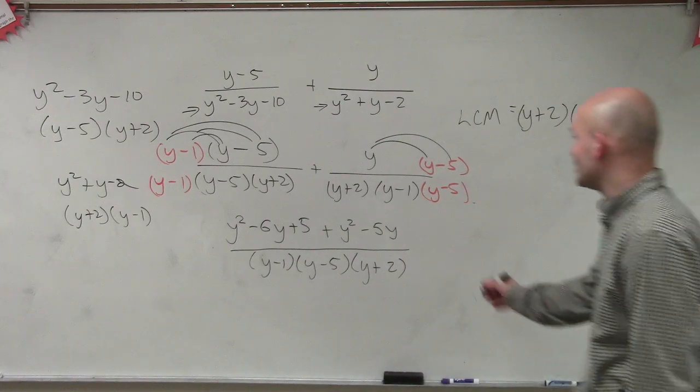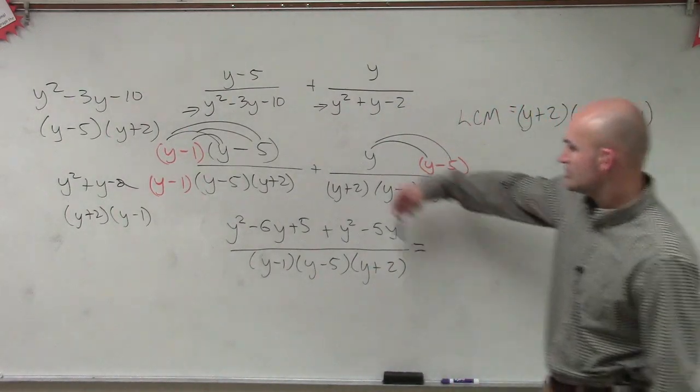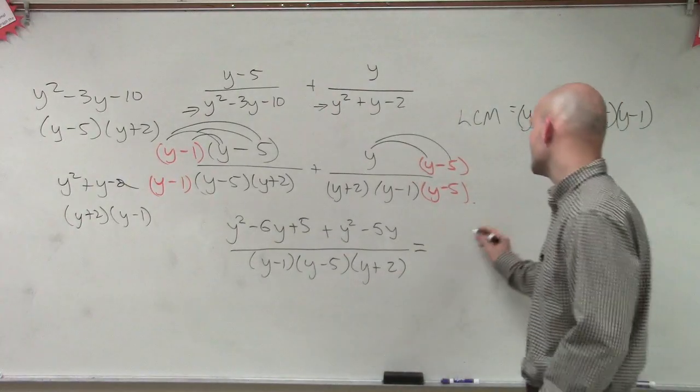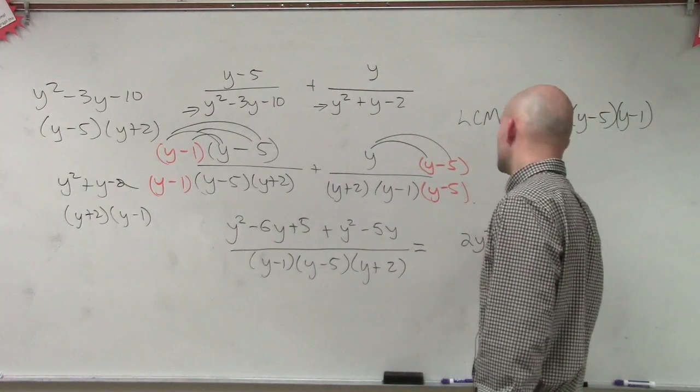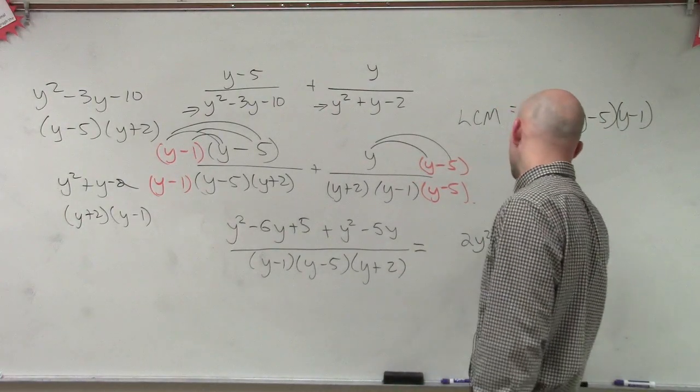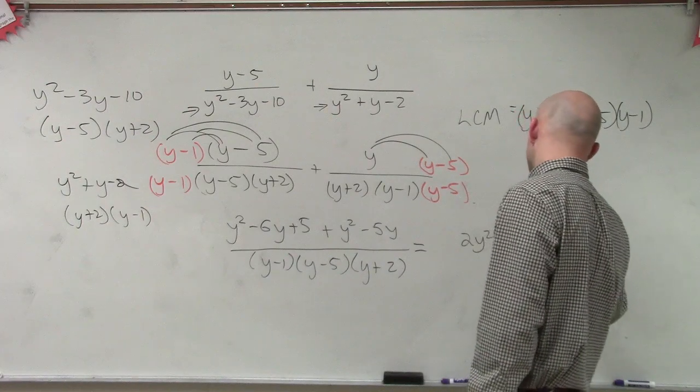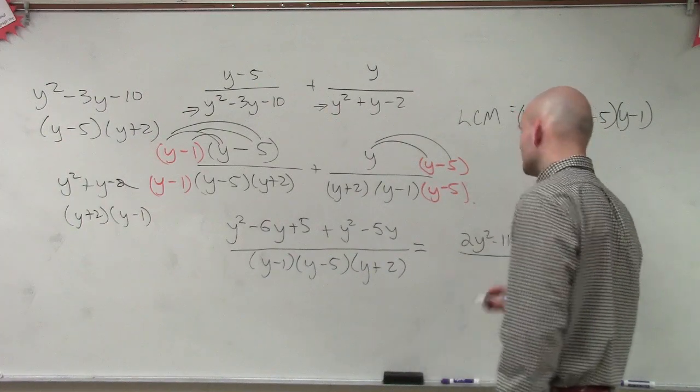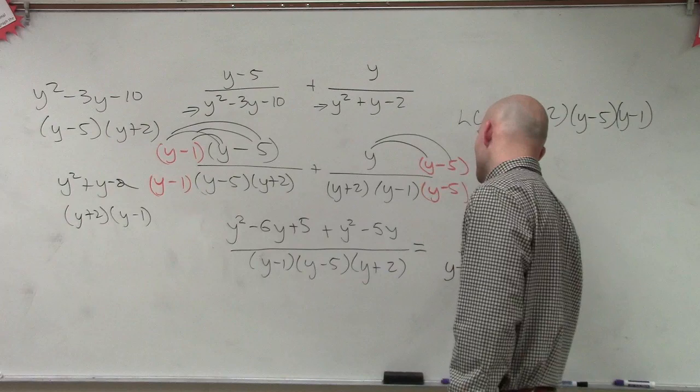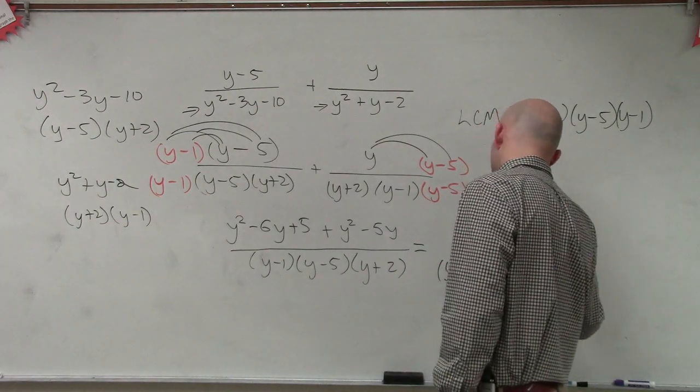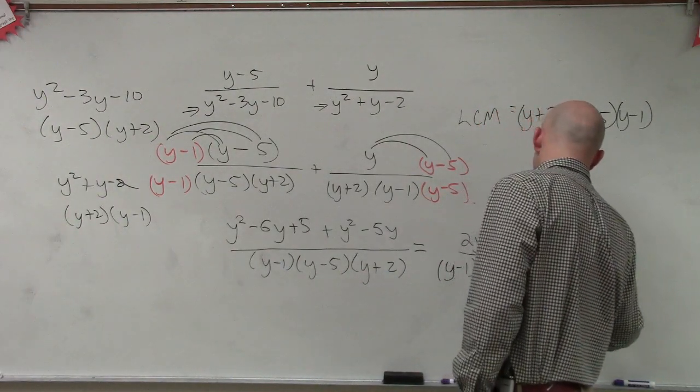Now, to get my final answer, let's just combine our like terms. So we could say y squared plus y squared is 2y squared minus 11y plus 5 over y minus 1 times y minus 5 times y plus 2.